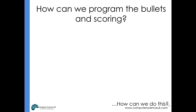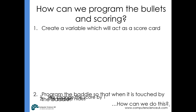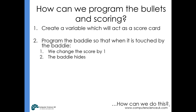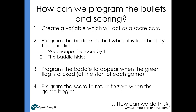Now we want to program the bullets so that if a baddie is touched by a bullet, we get a point. We create a variable as the scorecard, then program the baddie so that when it's touched by the bullet, the score changes by one and the baddie hides. We also need to program the baddie to appear when the green flag is clicked, and ensure the score returns to zero when the game begins.